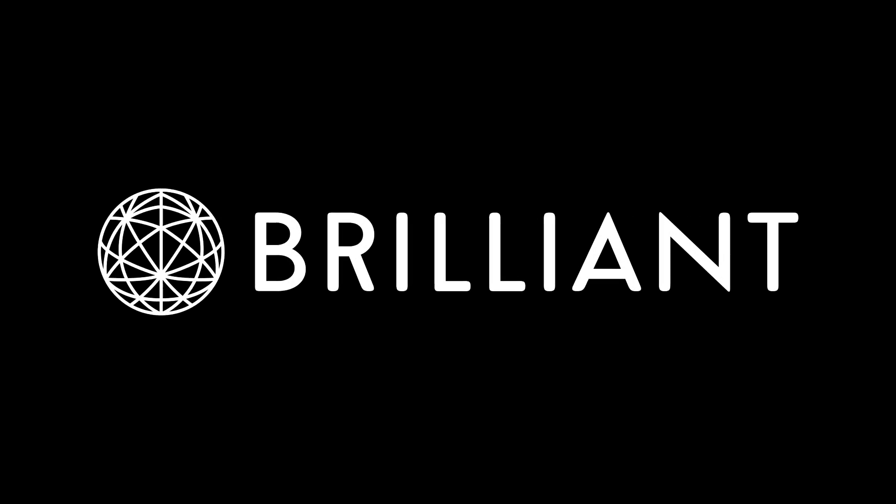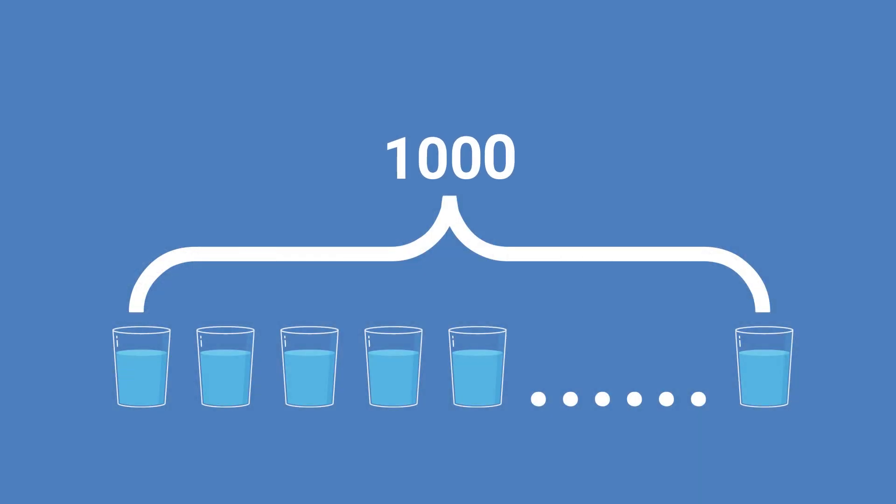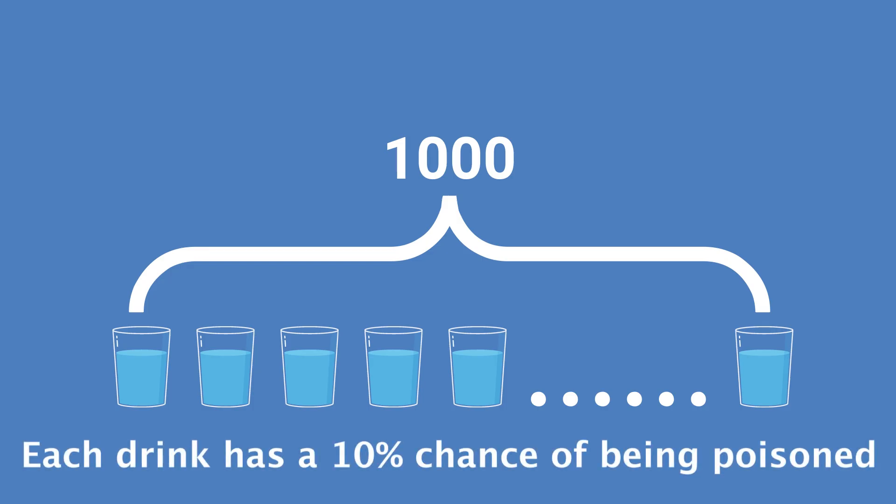This video is sponsored by Brilliant. Let's say we have a thousand drinks that all look identical, but some of them have been poisoned. For now let's say we know that any drink has a 10% chance of being poisoned, and then we'll solve a more generic case later.